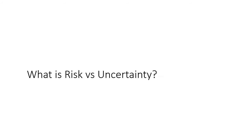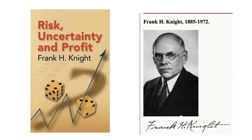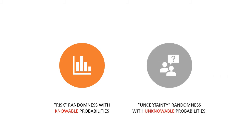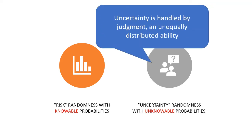What do we know about risk and uncertainty? This topic has been studied by the American economist Frank Knight in his doctoral thesis back in 1921. The main difference is related to the probability distribution of an event. If the future is unknown with a known probability distribution of all possible outcomes, this refers to as risk. However, if the probability distribution is unknown, it refers to uncertainty. Importantly, Knight points out that while risk can be managed and insured against, uncertainty is handled by judgment and unequally distributed ability.